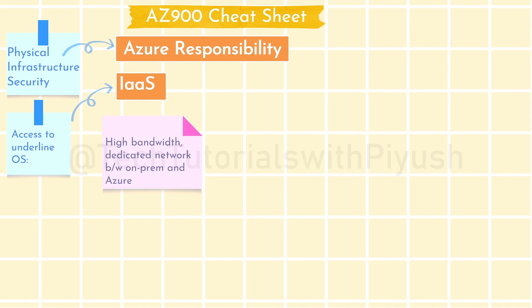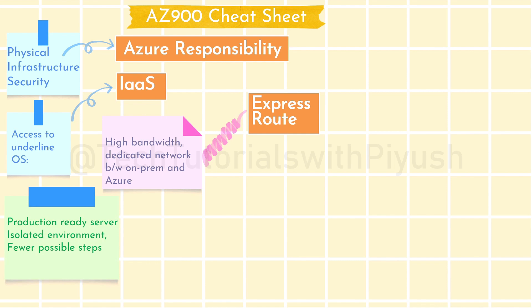When it comes to a service that needs high bandwidth and a dedicated network between on-premises and Azure, we use Azure ExpressRoute. Make sure you understand the difference between VPN Gateway and ExpressRoute. ExpressRoute is the costlier solution, but it provides high bandwidth and a dedicated network between your on-premises environment and Azure.